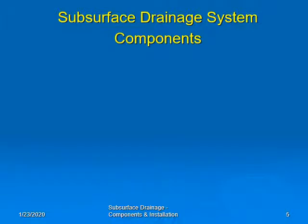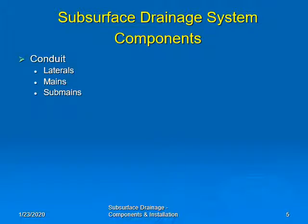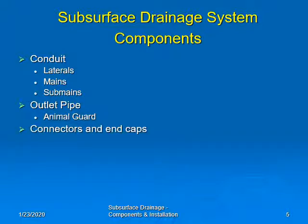A subsurface drainage system can have several components depending on the site conditions. The main component is the conduit — pipe or tile. Depending on the location and system, the conduit will be called either a lateral, a main, or a sub-main. An outlet pipe will be required where the main outlets the collected water, and most outlet pipes will require an animal guard. NRCS specifies that conduits be joined using manufactured connections and that the end of the conduit be closed with manufactured end caps.